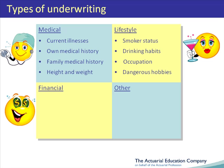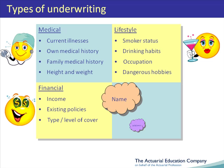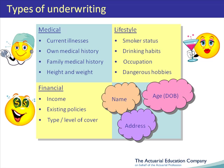In terms of financial information, the underwriter might want to consider the individual's income, any existing policies the individual has, and the type and level of cover that is being applied for. Other information that would be included on the proposal form includes contact details such as name and address, and also information on age — or more usefully date of birth — and sex.